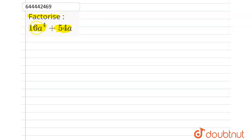So we will find the factors of this equation. The equation is 16a to the power 4 plus 54a. Now on finding common factor of both, 2a is the common factor. So taking 2a common, we have 8a cube plus 27.